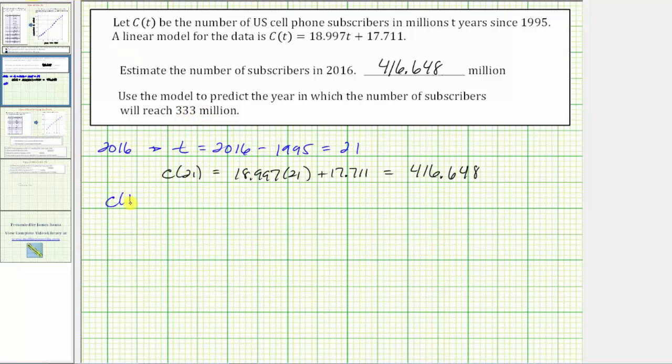We know c(t) is equal to 333. Substituting 333 for c(t) would give us the equation 333 = 18.997t + 17.711.